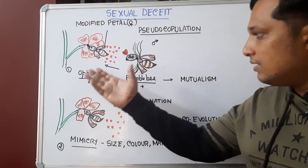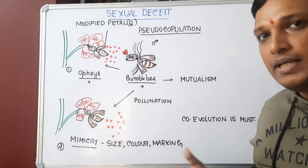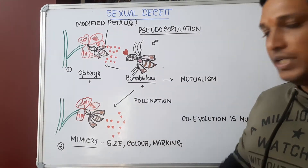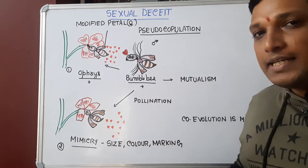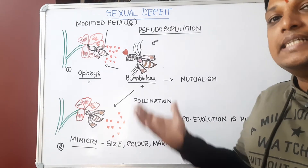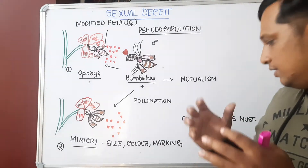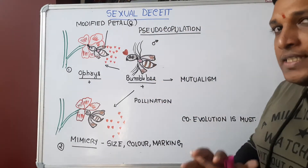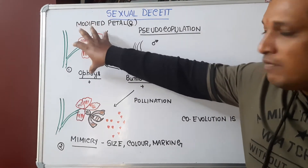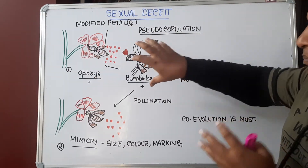So what kind of interaction is this? It is mutualism — both the flowering plant and the bumblebee are benefited. The plant gets benefited by having pollination occur. The bumblebee gets benefited by getting the chance to copulate, because if it doesn't undergo copulation, its race will also end. This is about sexual deceit — the flower, by modifying its petal, fools the male bumblebee in terms of a sexual act.